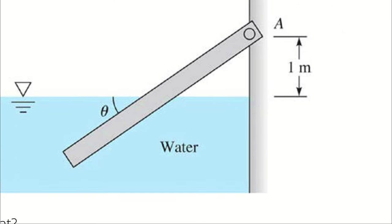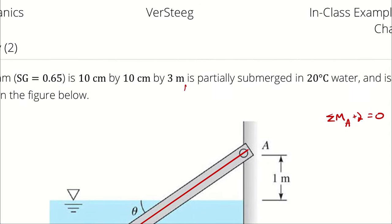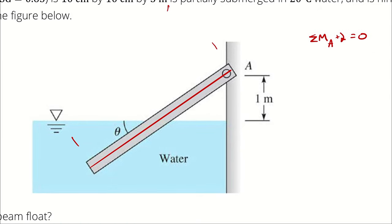When we're considering the forces acting on this, I'm going to simplify our relationship a little bit. This beam, that has a length of 3 meters, has two forces acting on it. One is its own weight. The other is the buoyant force. So FB, FW.